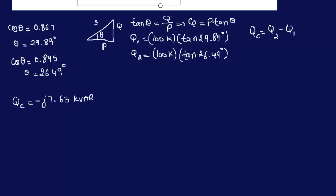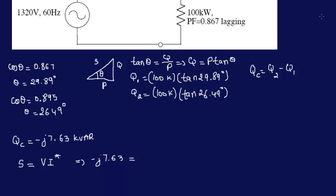So I have minus 7.63 kVAR. That's our capacitor. Now, my original goal is to find C, and I can get C from the reactance. Let's look at our circuit. So S, complex power, is equal to VI conjugate.